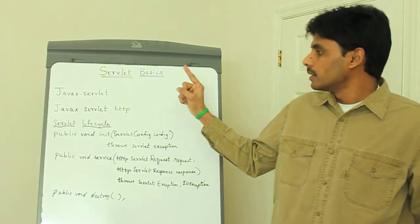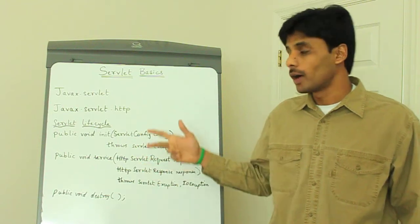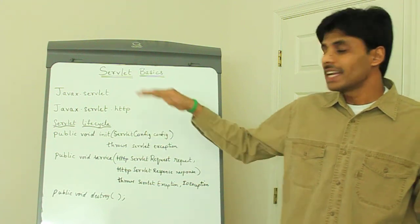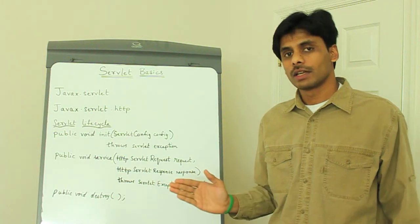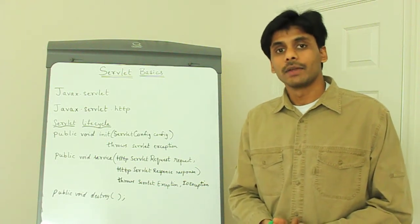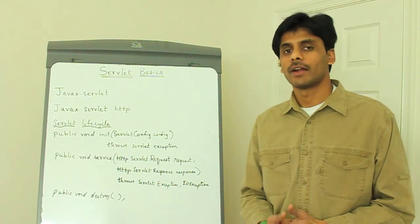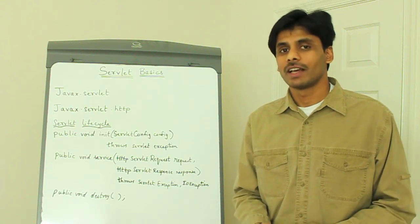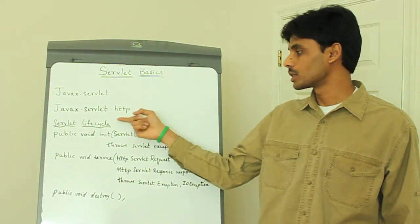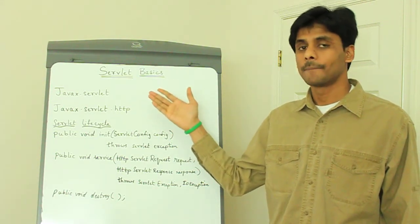The servlet API is made up of several classes and interfaces which fall into two packages: javax.servlet and javax.servlet.http. The main interface is the servlet interface, which is implemented by the GenericServlet class. You can implement GenericServlet to handle any request, not just HTTP. But in most cases, since we are developing web applications, we implement HttpServlet, which is in the javax.servlet.http package, and HttpServlet in turn implements GenericServlet.